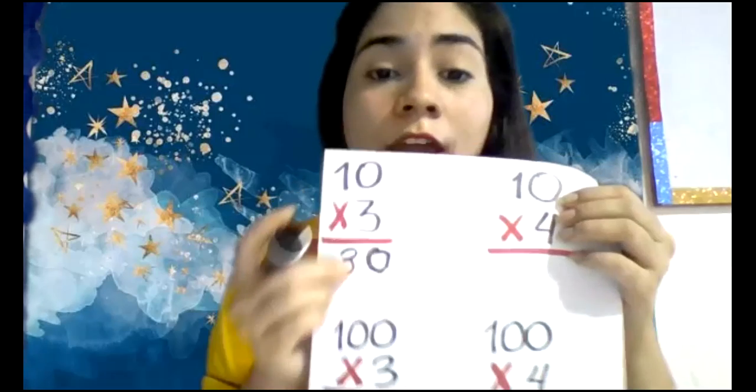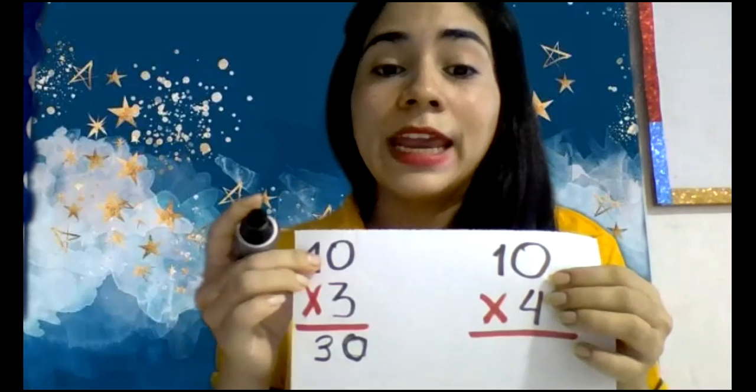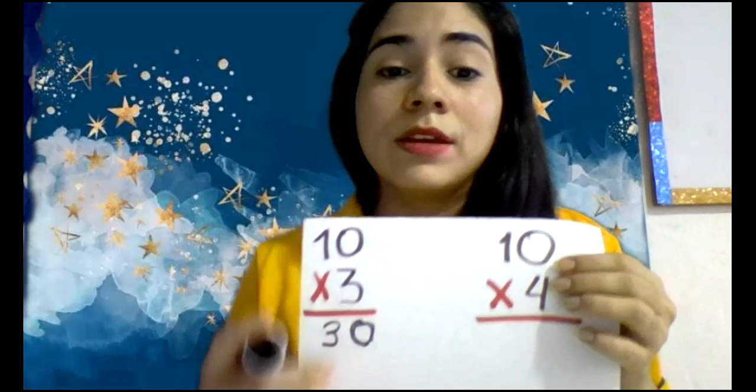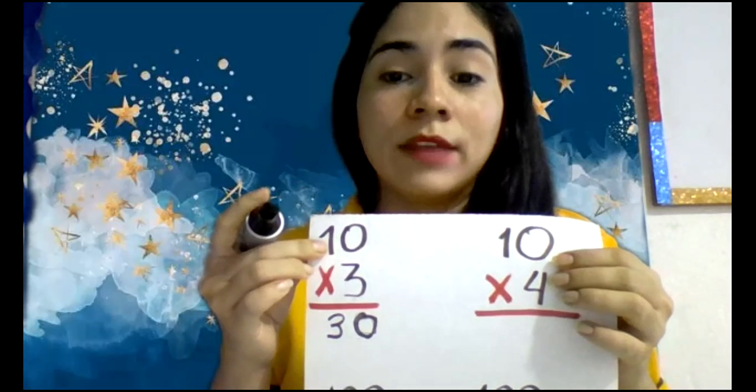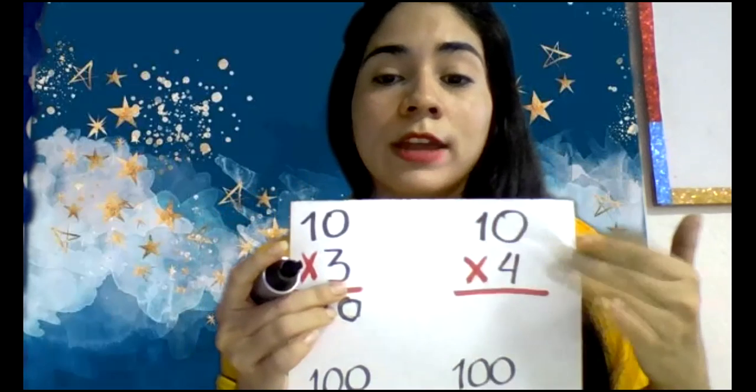So 30, 30 is a multiple of 10 and 3. 30 is a multiple of 10. Now let's try with this other example.